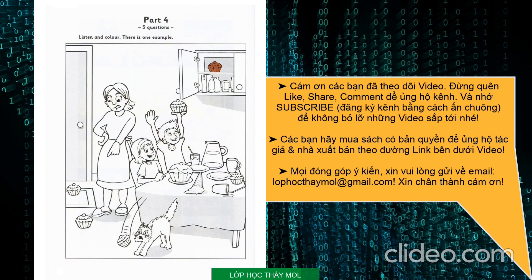Now, you listen and colour. 1. Can you see the boy? Yes. He's got a cake in his hand. Yes. Well, colour that cake pink. I'm doing that now. That's very nice.